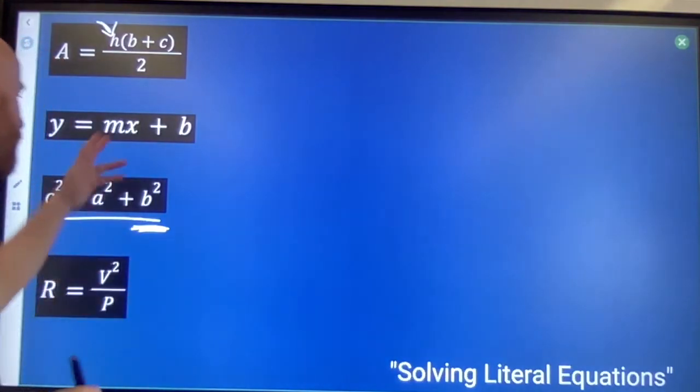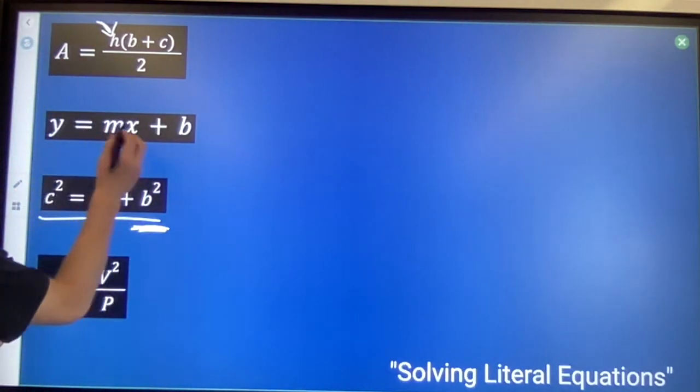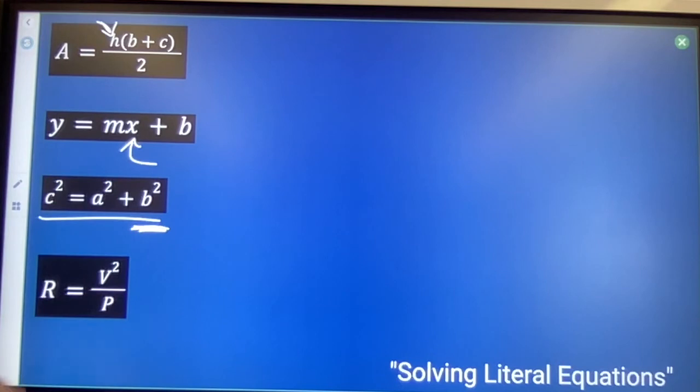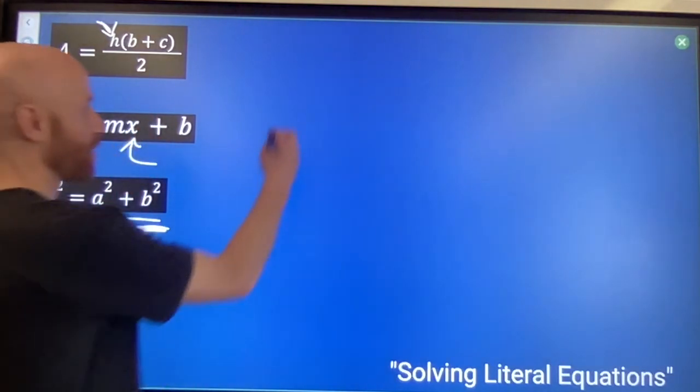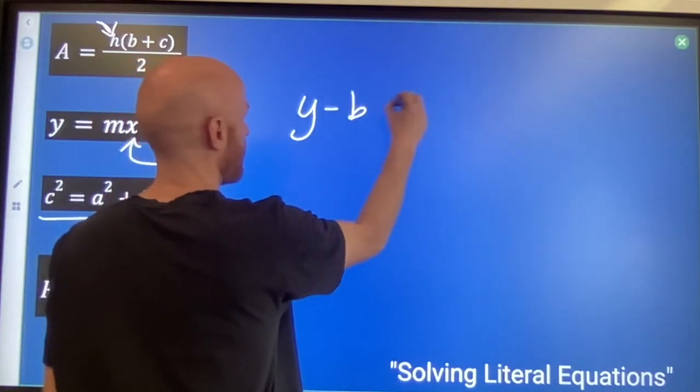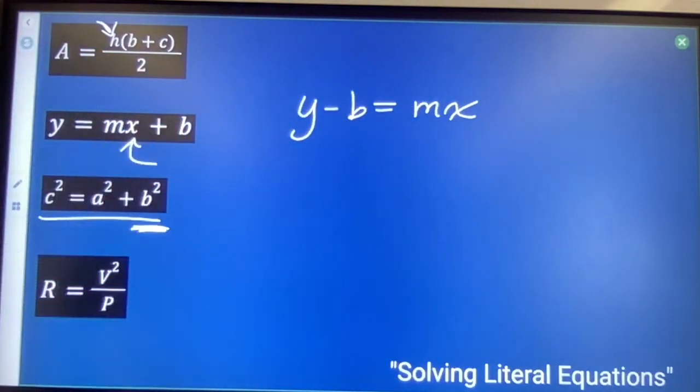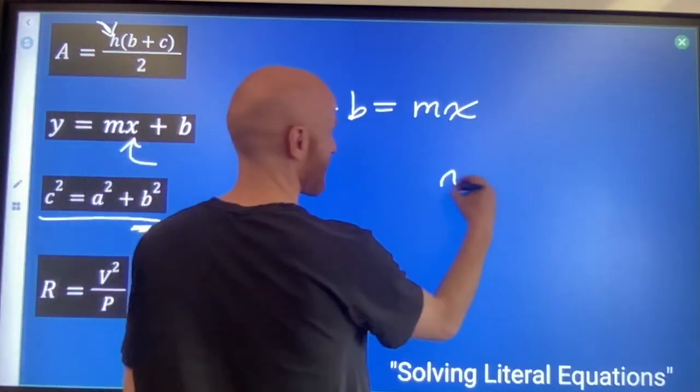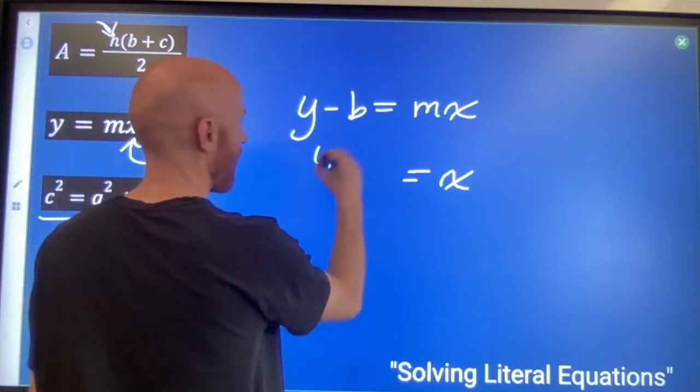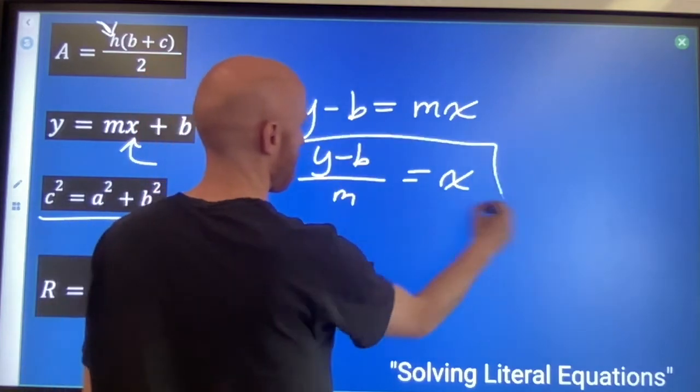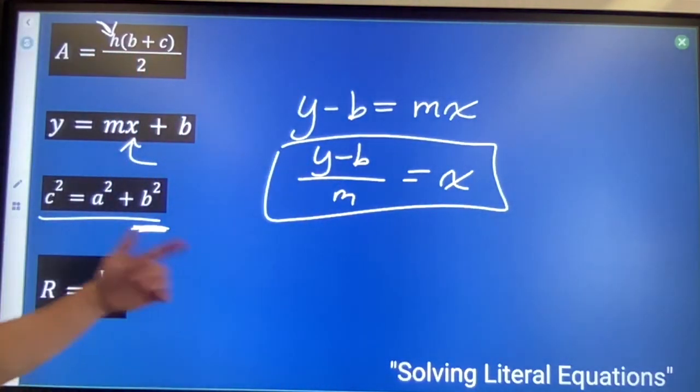Might as well do two more examples since I got them up here. What if I wanted to solve for X? Subtract B from both sides. We get Y minus B equals MX. Divide both sides by M. We get X equals Y minus B over M. X is by itself now. X is solved for.